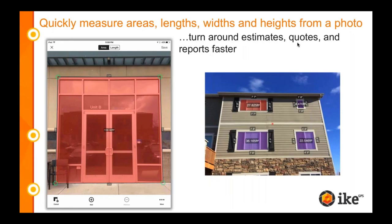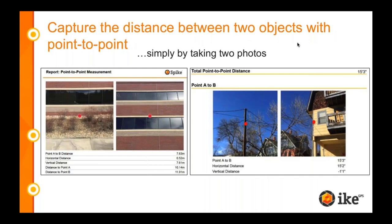With Spike, you can measure areas, lengths, windows, height, residential and commercial projects — whatever measurements you need. You can use Spike on interiors as well. You'll see a lot of exterior measurements because exteriors are often harder to measure or harder to reach, but you can just as well use Spike on interiors. You can also capture the distance between two objects with our point-to-point measurement tool, which I will be demonstrating.